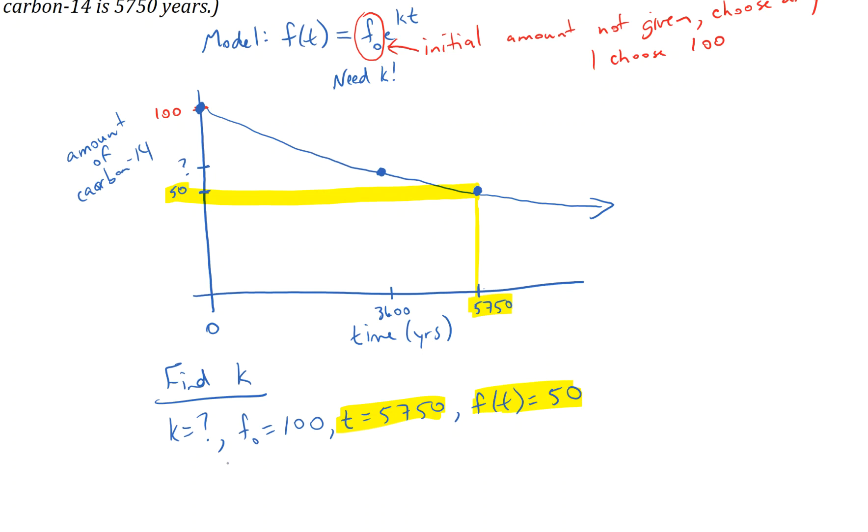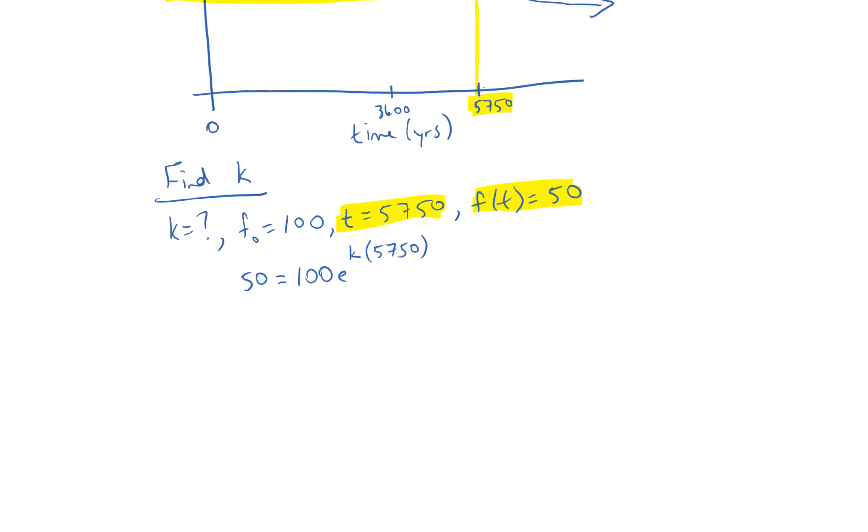So I'm going to plug those values into the model. So f(t), I'm using the model that I listed up here. f(t) is 50, equals f sub 0, 100, times e to the k, we don't know k, times t, which is 5,750. And now we can solve this for k.